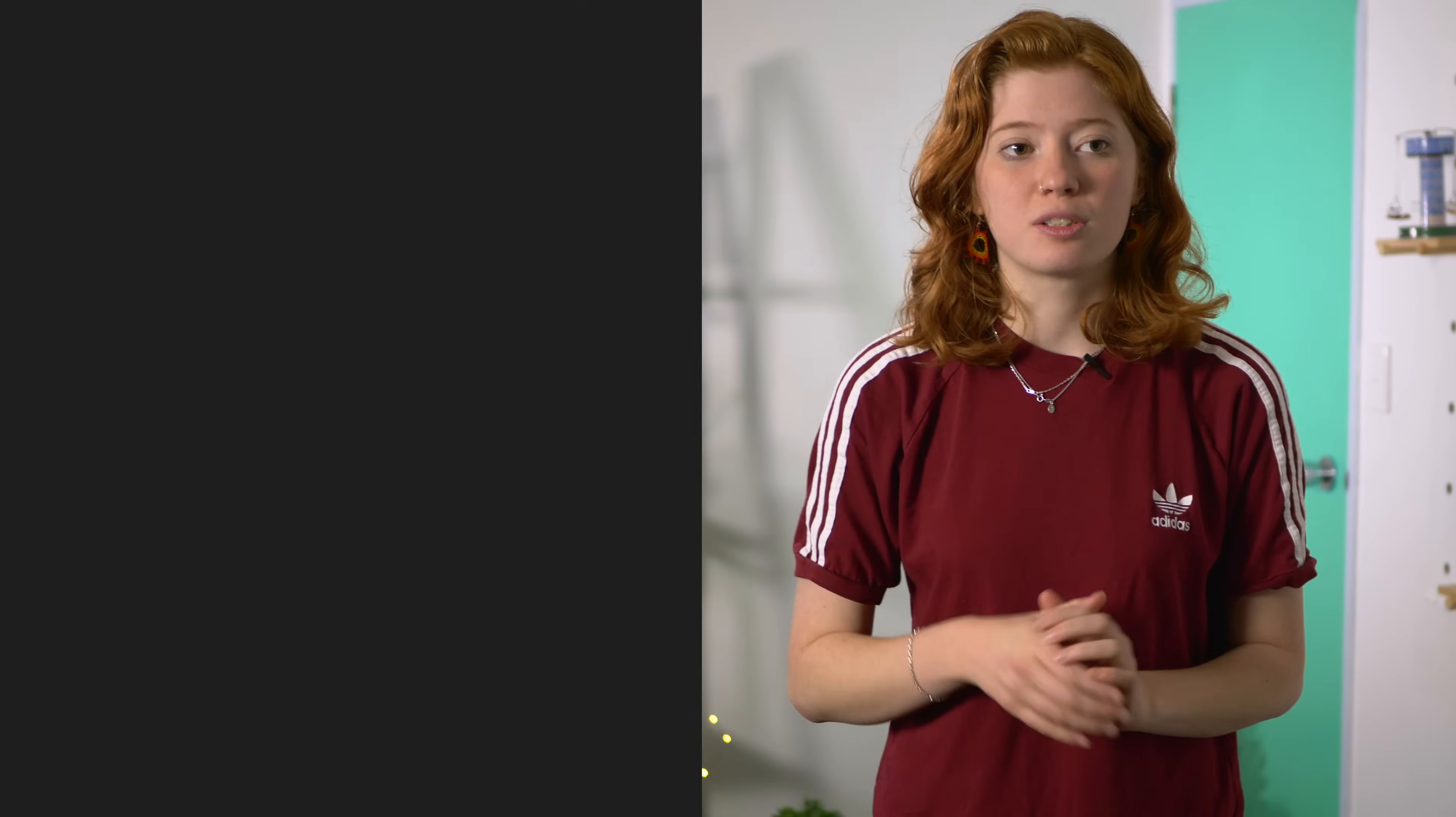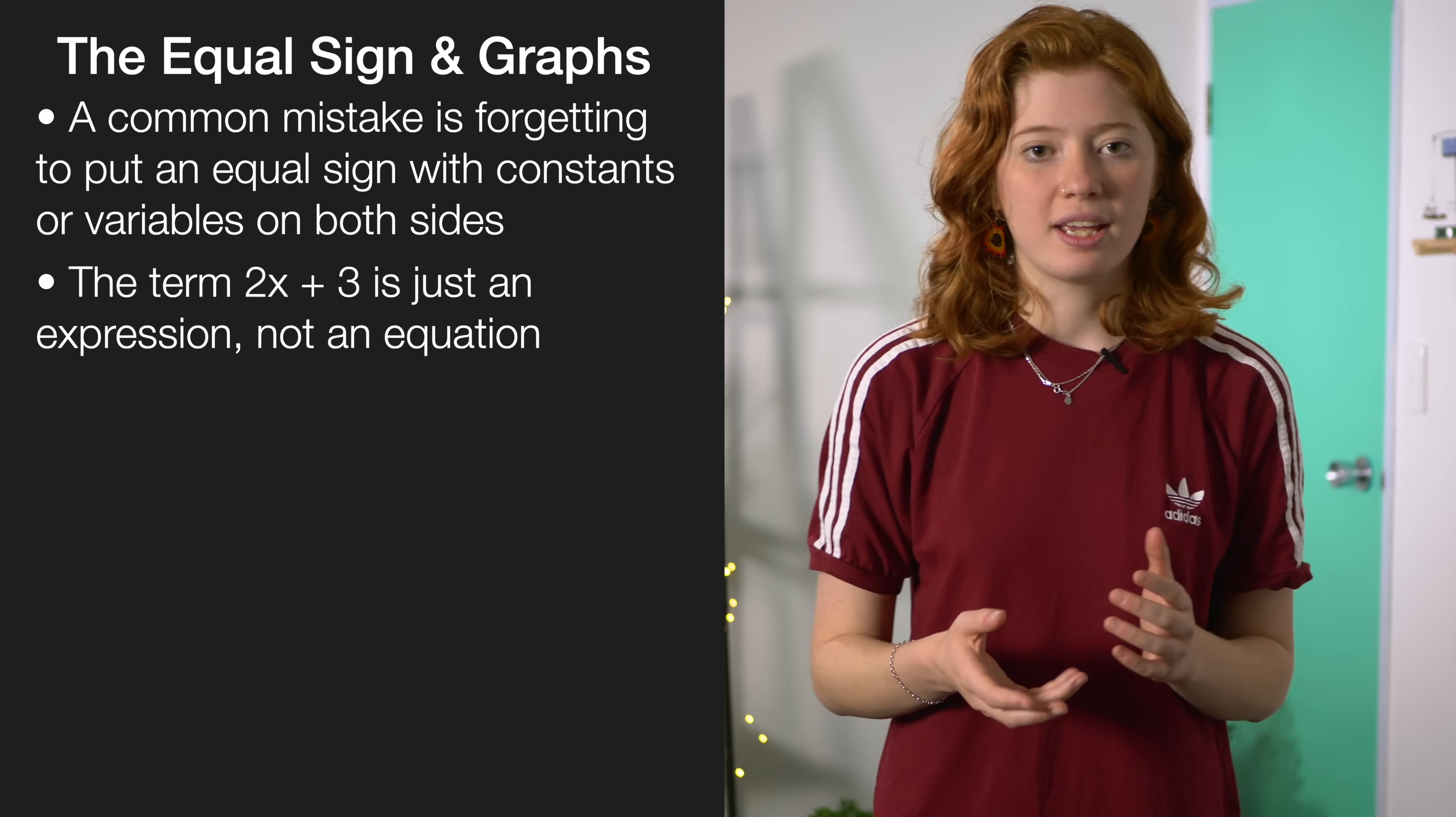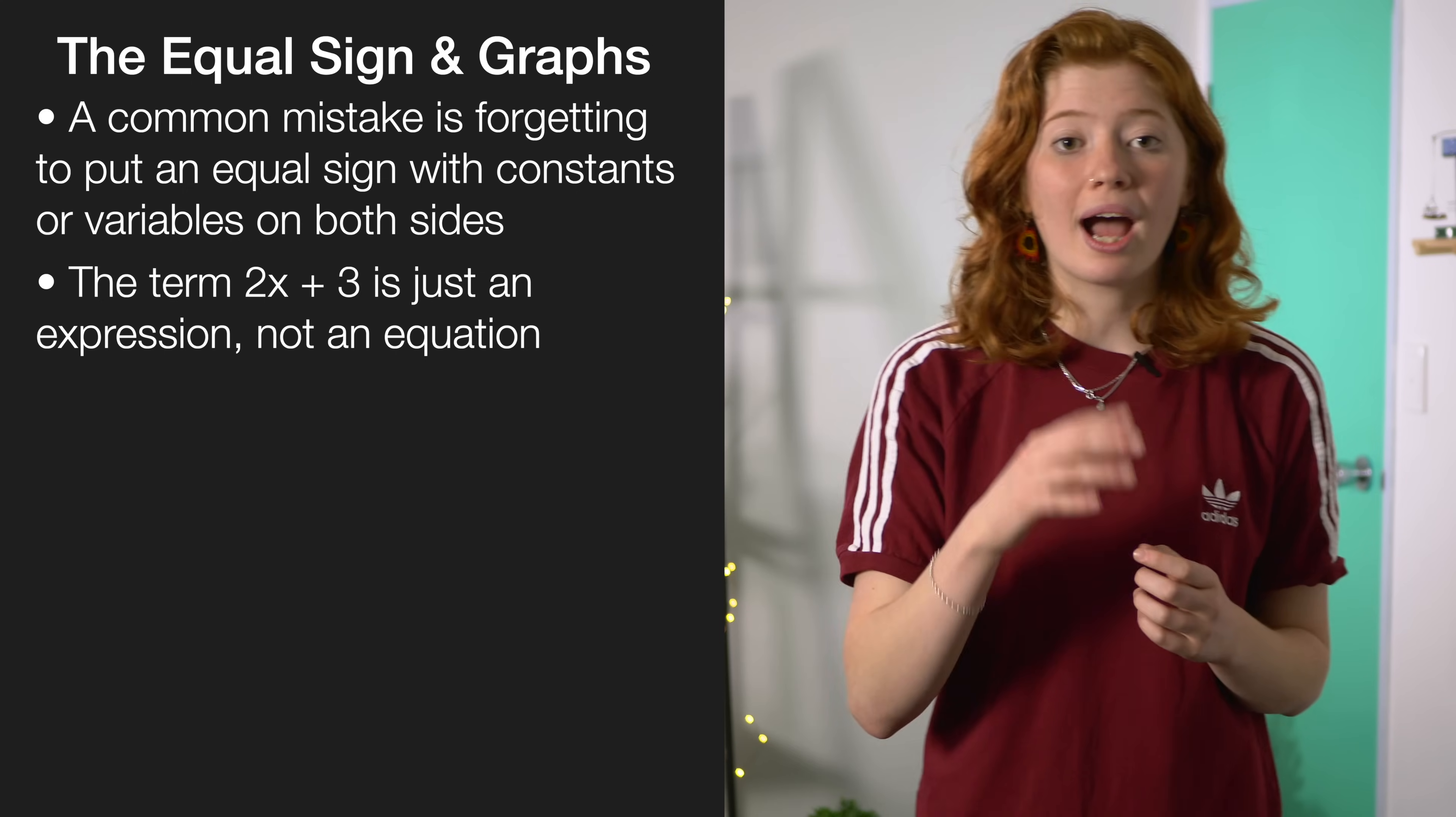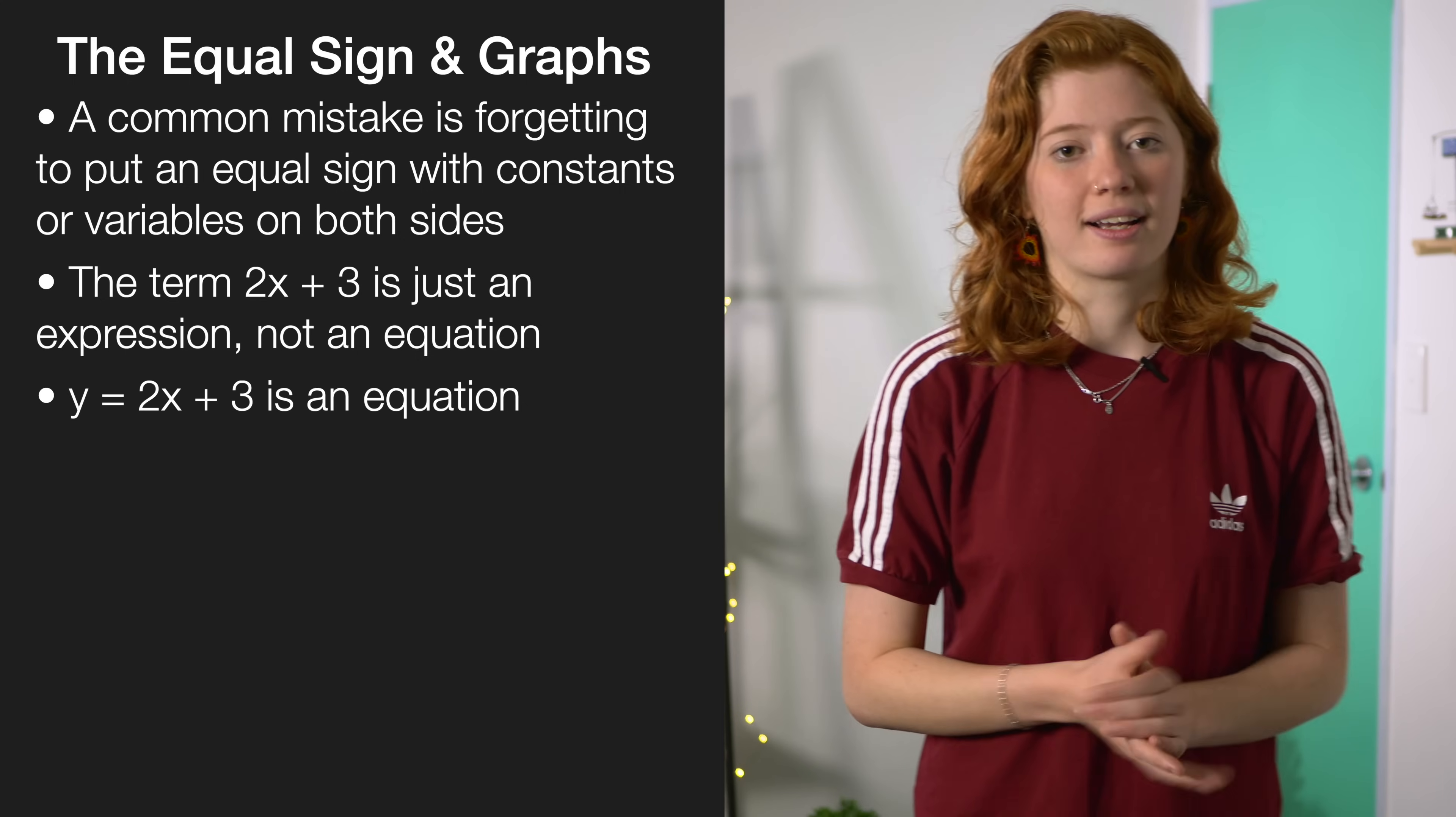A really important thing to remember for this standard is that an equation has an equal sign. A really common mistake that people make is forgetting to put in the equal sign with terms on both the left and the right hand side. For example the term 2x plus 3 is just an expression. In order to make it an equation we need to do something like y equals 2x plus 3. If you forget to put in that equal sign with the left and the right you will get marked down.